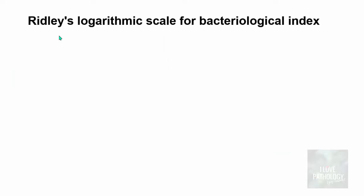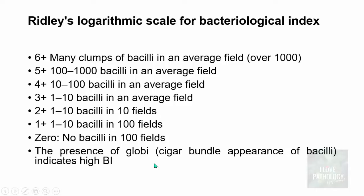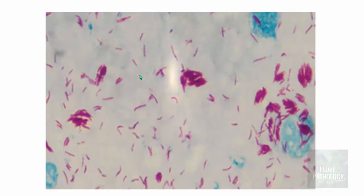Ridley's logarithmic scale for the bacteriological index classifies smear results as follows: 0 if no bacilli in 100 fields; 1+ if 1 to 10 bacilli in 100 fields; 2+ if 1 to 10 bacilli in 10 fields; 3+ if 1 to 10 bacilli on average per field; 4+ if around 100 bacilli per average field; 5+ if around 1000 bacilli per average field; and 6+ if lots of clumps are seen per average field. The globi — which show a cigar bundle appearance of bacilli within a cell — indicate a very high bacteriological index. All cases except 0 are categorized as multibacillary leprosy.